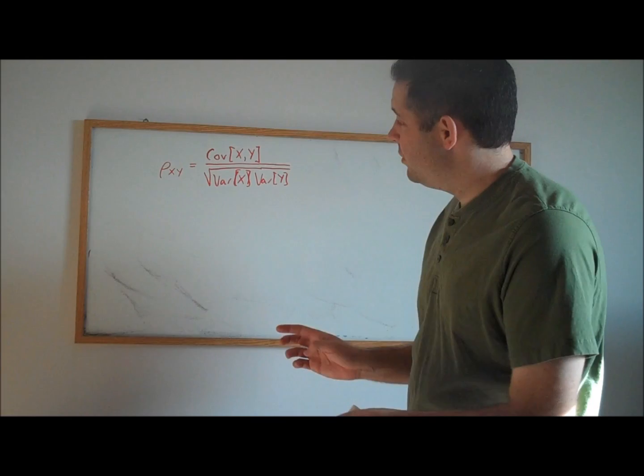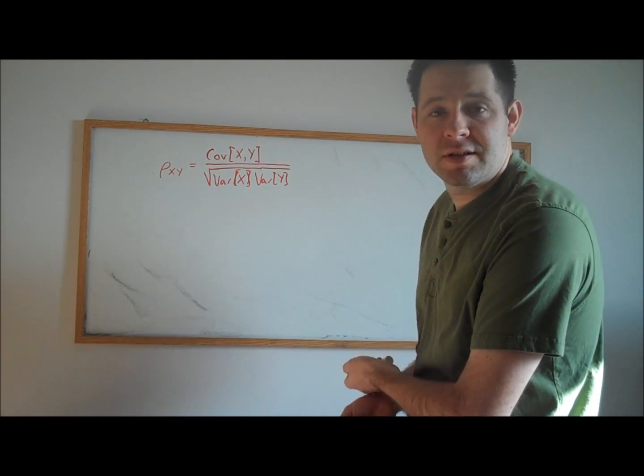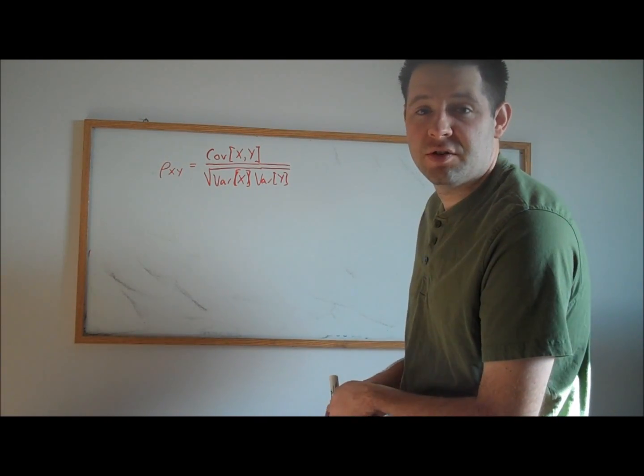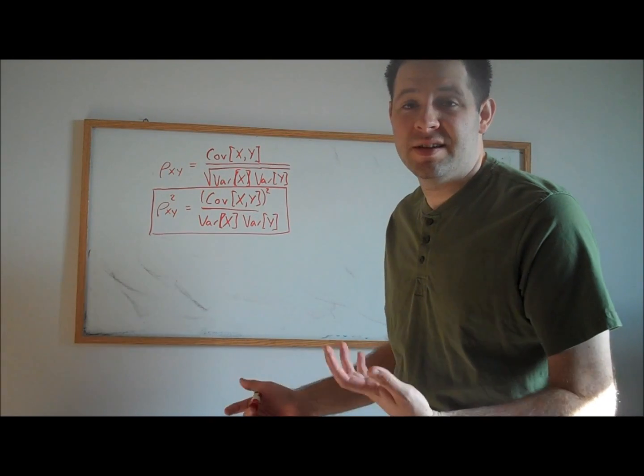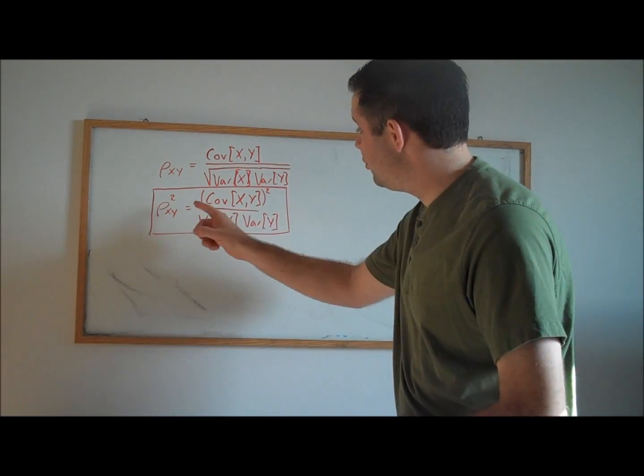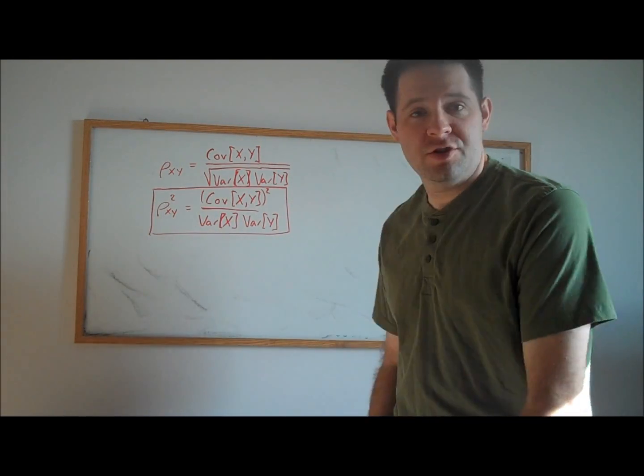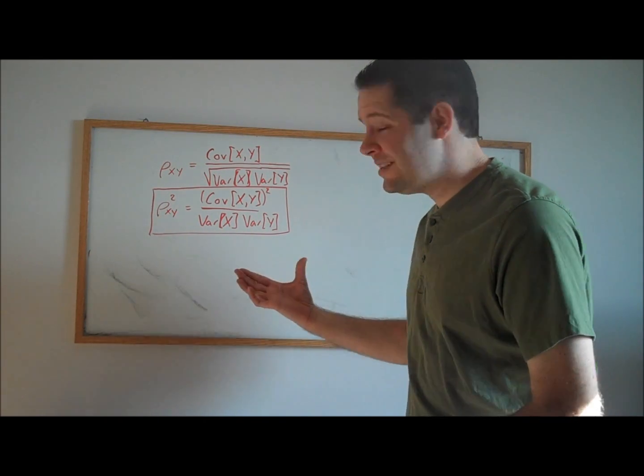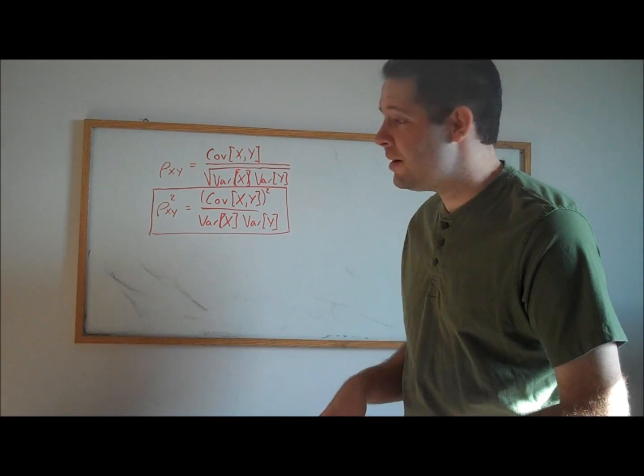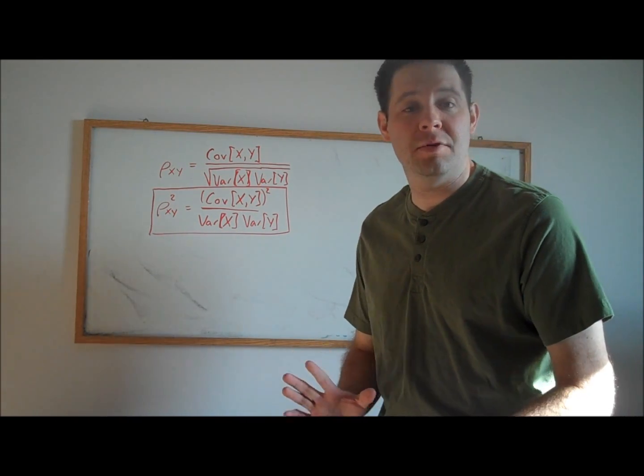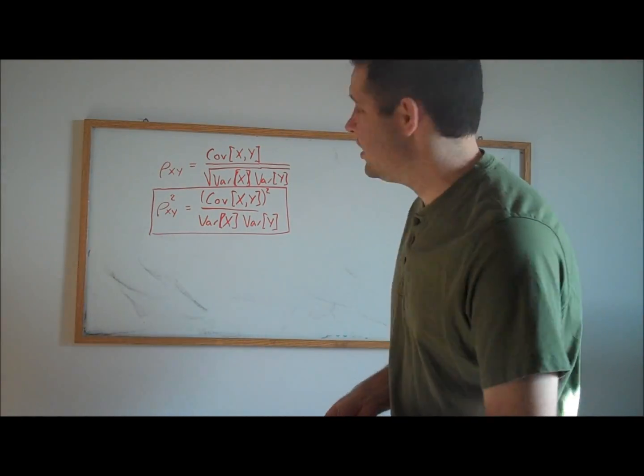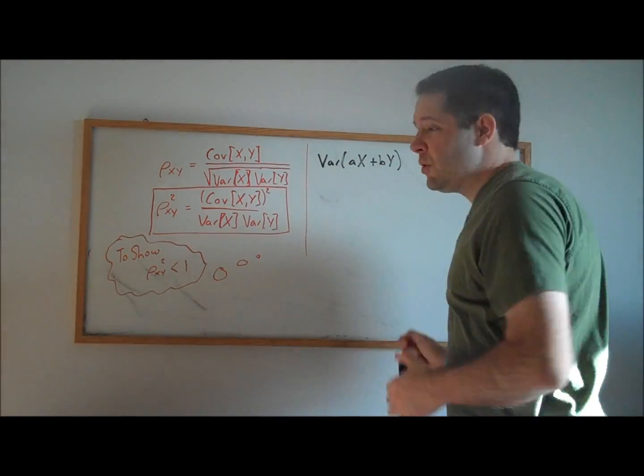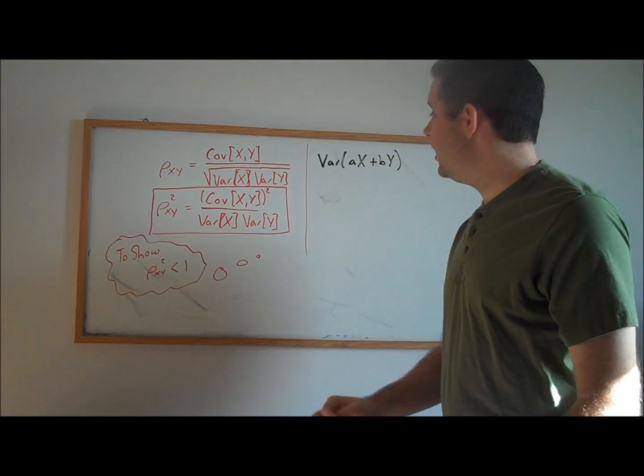Now, that's equivalent to, we could square both sides, showing that the square of the correlation is between 0 and 1. Squaring it means it's going to be positive, but we need to show that this combination of covariances and variances is going to be less than 1. But to do that, we need to establish a preliminary result. We're going to need an expression for the variance of a linear combination.